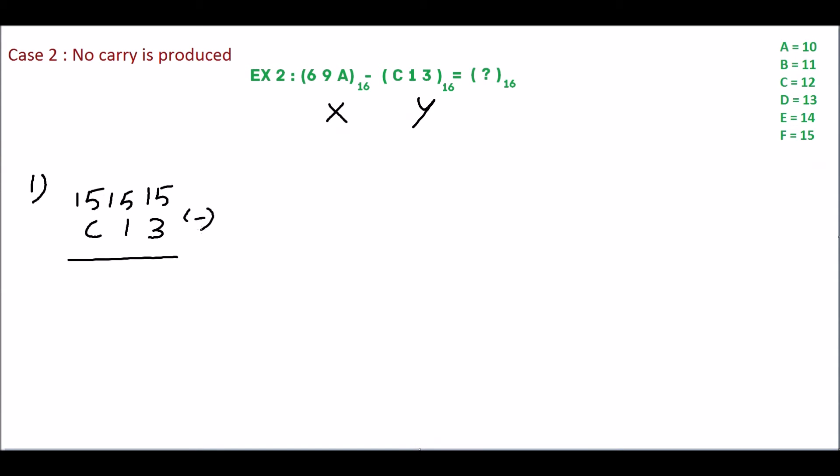15 minus 3 is 12. 12 is equivalent of C. 15 minus 1 is 14 which is equivalent of E. C is equivalent of 12, so 15 minus 12 is 3. 3-E-C is the 15's complement.